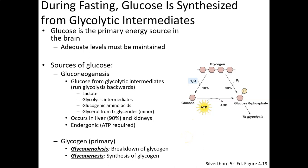A few terminology points: making new glucose is gluconeogenesis. Amino acids that can be converted to glucose are called glucogenic amino acids. If we have excess glucose, we can make glycogen — the storage form of glucose energy — and that process is called glycogenesis. Breaking down glycogen is called glycogenolysis. We break down glycogen into glucose and then use that as fuel.